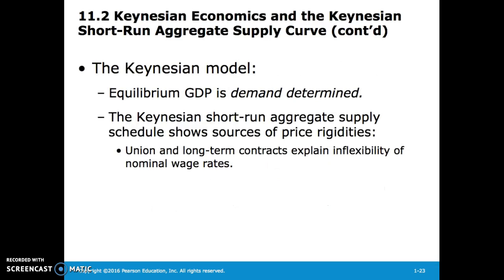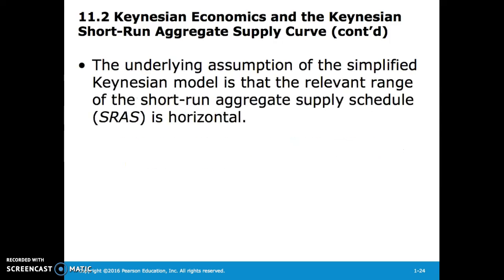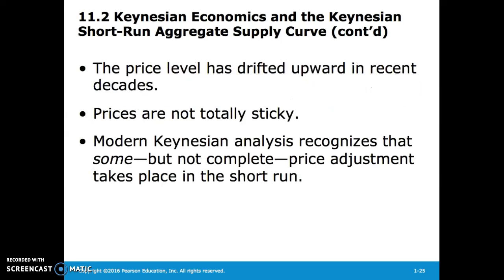The Keynesian model suggests equilibrium GDP is demand-determined. The short-run aggregate supply schedule shows sources of price rigidities. Union and long-term contracts explain the inflexibility of nominal wage rates. The underlying assumption is that the relevant range of the short-run aggregate supply schedule is horizontal. However, the price level has drifted up in recent decades, so prices are not totally sticky, and modern Keynesian analysis recognizes that some, but not complete, price adjustment takes place in the short run.